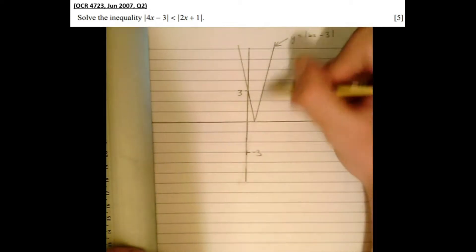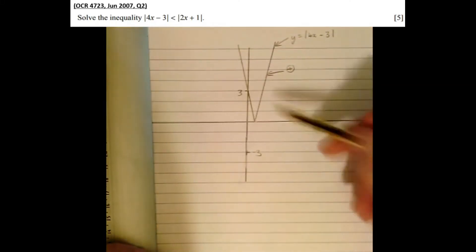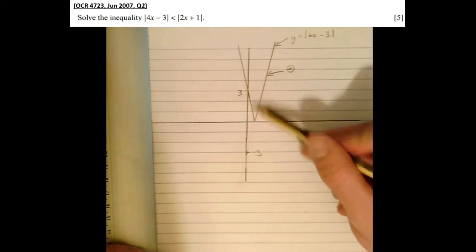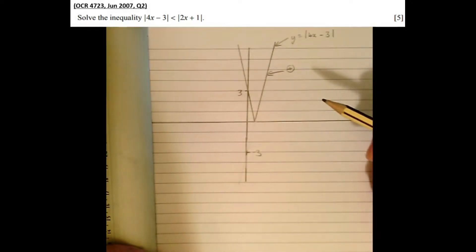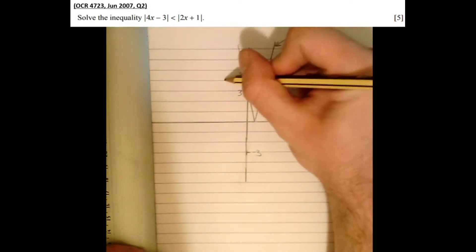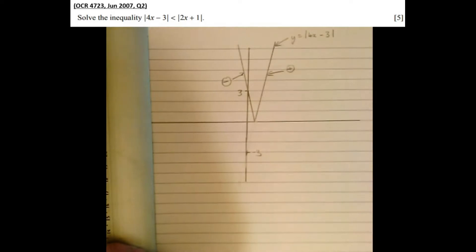This part of the graph here, the original part, is positive. But what we've done in reflecting it, this part of the graph can be considered the negative part of the graph. That's the part that we've reflected through the x-axis, therefore making it negative.